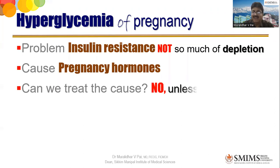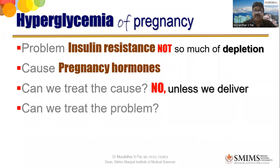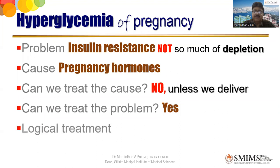The main problem is insulin resistance, not depletion. Logically, the treatment has to be against insulin resistance. The cause is pregnancy hormones — HPL, estrogen, progesterone. Can we treat the cause? No, unless we deliver her, same as in preeclampsia where delivery solves the problem. There are two types of GDM: onset variety caused by pregnancy, and first-recognized variety which is incidental to pregnancy. The first-recognized variety may continue even after delivery.